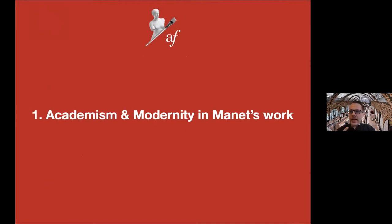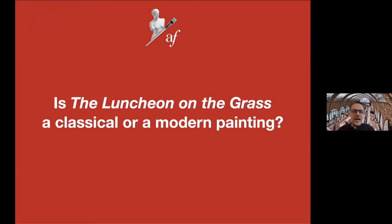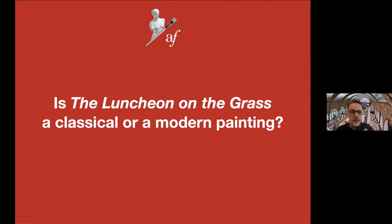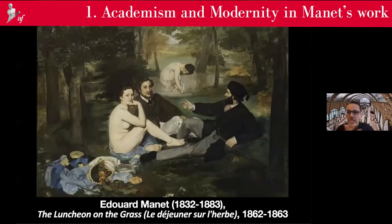This will be an introduction of the basics of Manet's work from the lens of Luncheon on the Grass. To discuss this first part, I will ask this particular question: is this painting a classical or a modern painting? Because as I mentioned earlier in my discussion with Sylvia, I said that this is the beginning of modernity in art. But if you look at it, you may spontaneously see it as a classical painting.